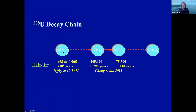Uranium-thorium dating is based on the U-238 decay chain. Uranium-238 is the ultimate parent with a half-life of about the same as the age of the Earth — four and a half billion years. It decays through a whole set of intermediate daughters eventually to lead-206, and uranium-lead dating is in part based on that. But we're picking off two intermediate daughters — uranium-234 and thorium-230 — in thorium-230 dating.